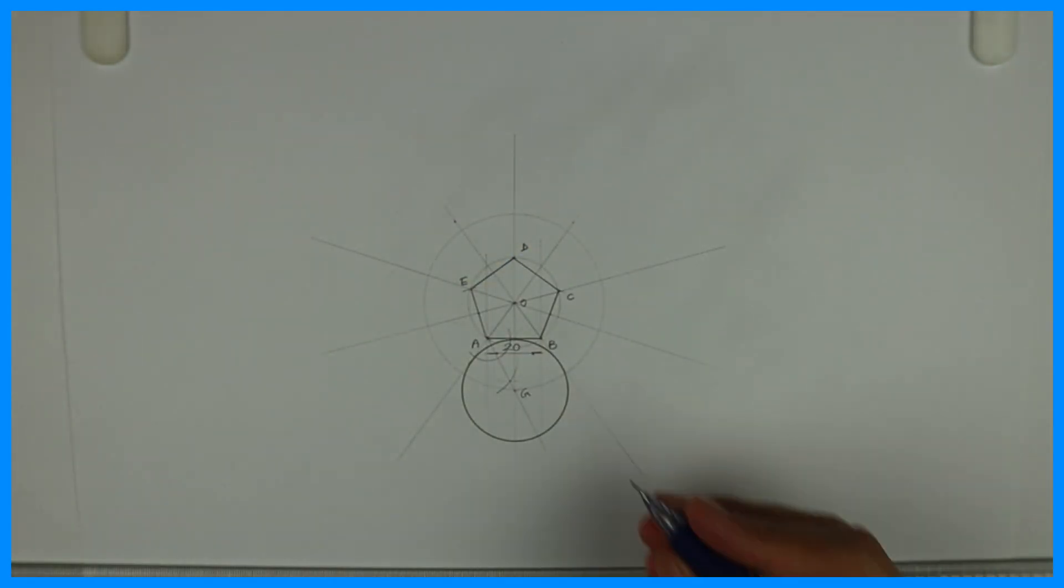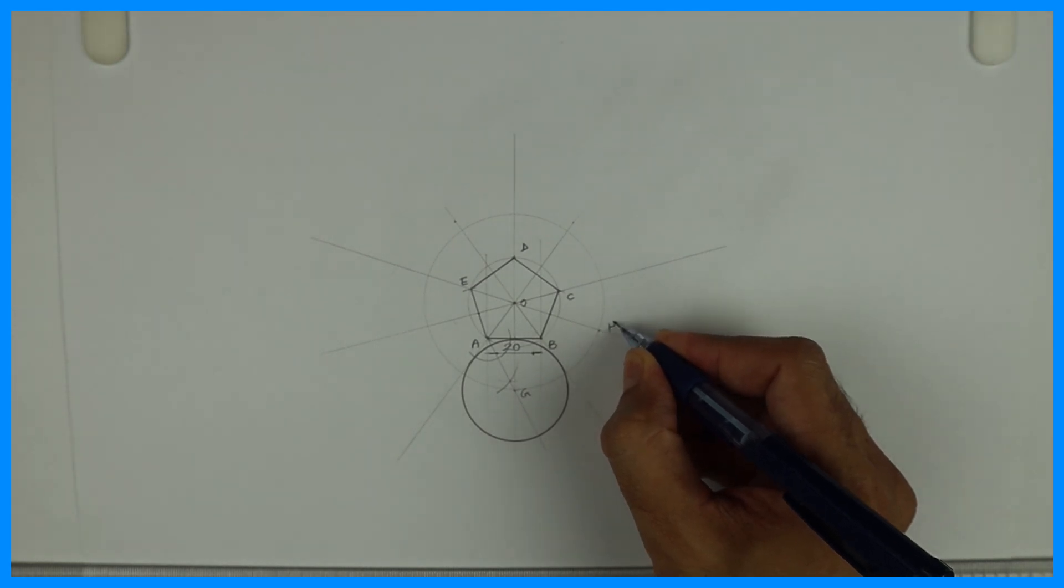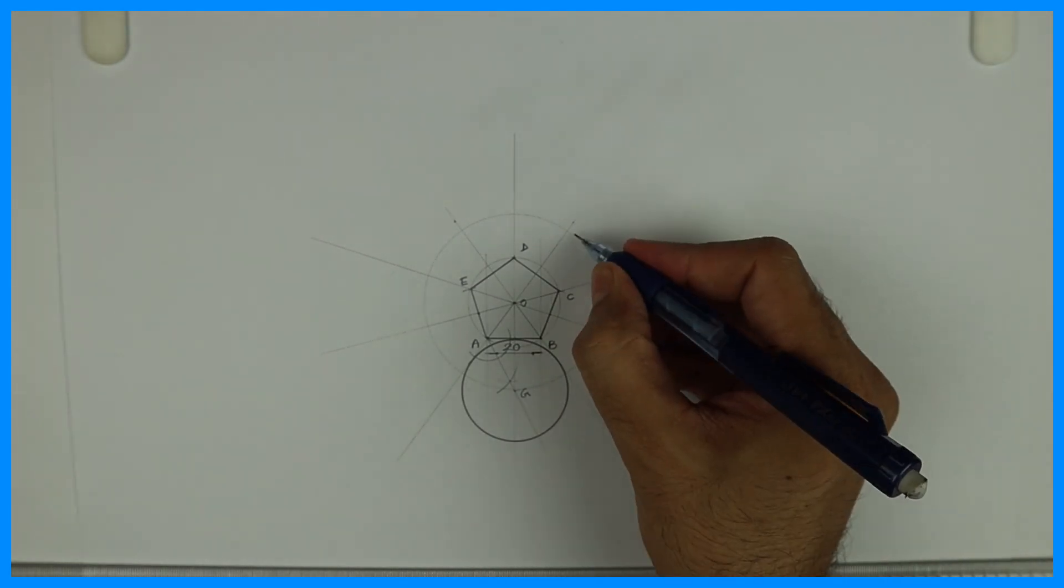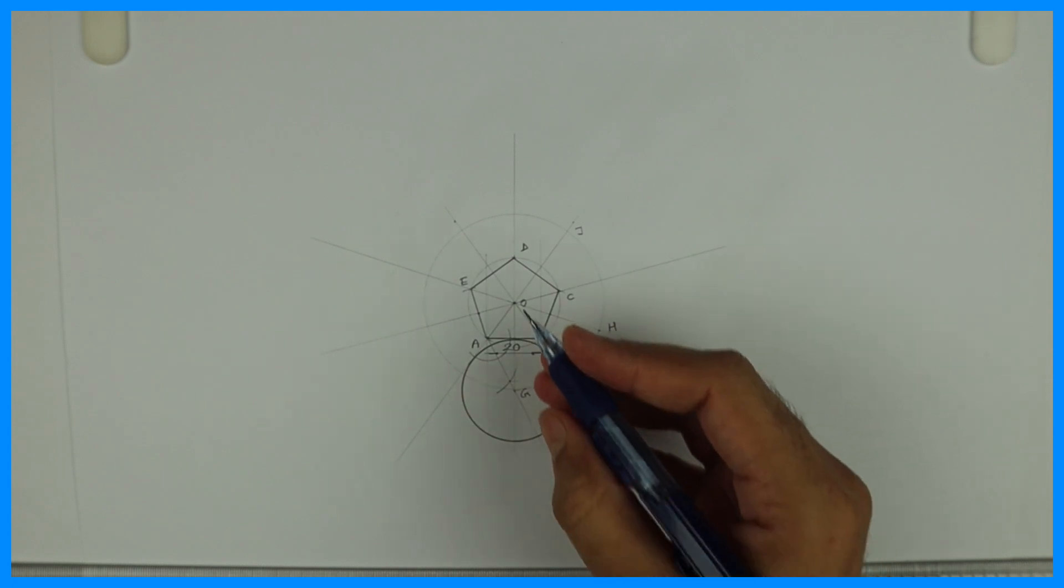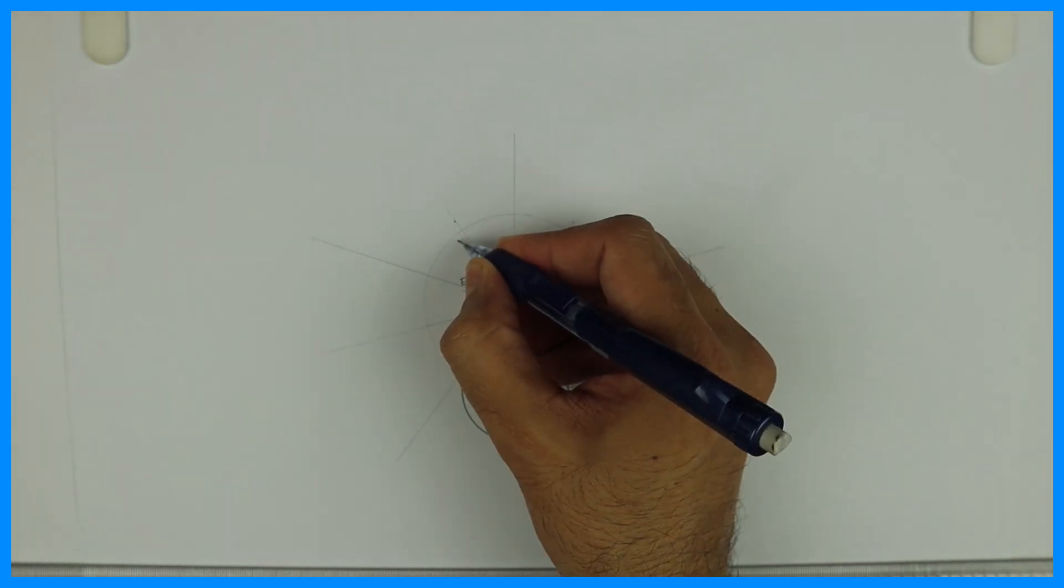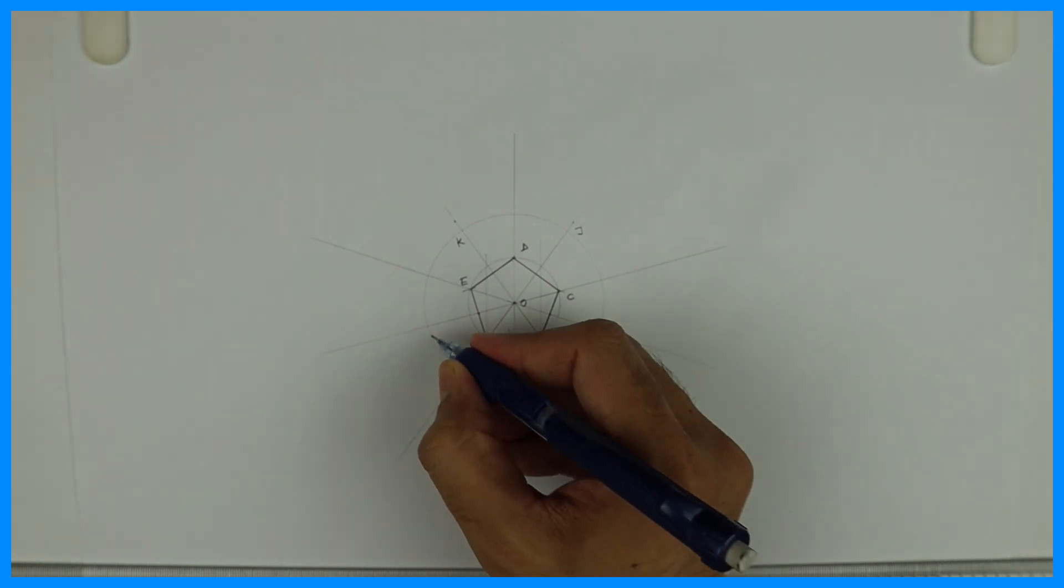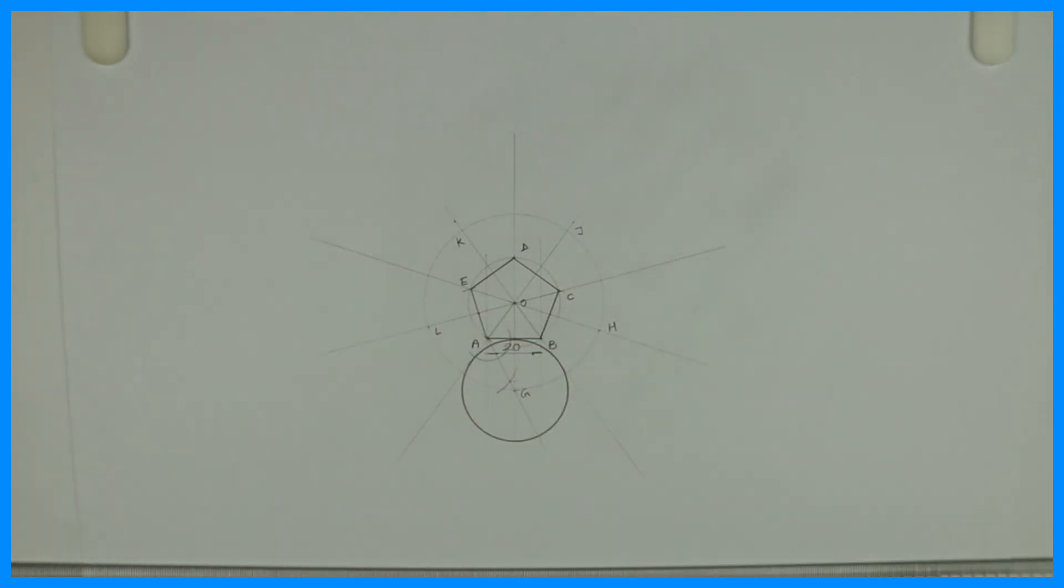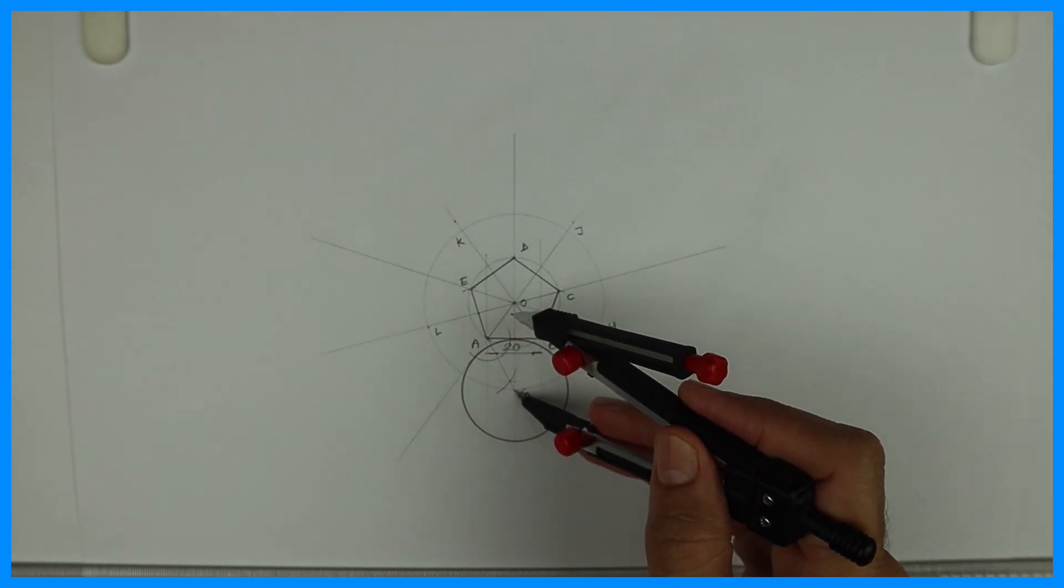So extend line like this, so we'll get the center point. This is you'll get H, then J, then this is K, and this is L. So you'll get five points like this.